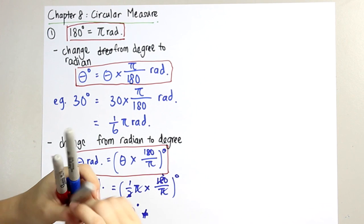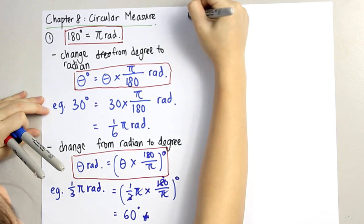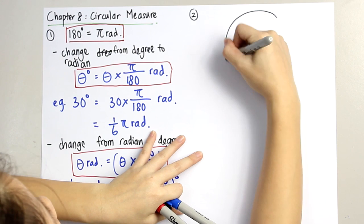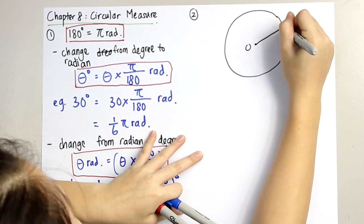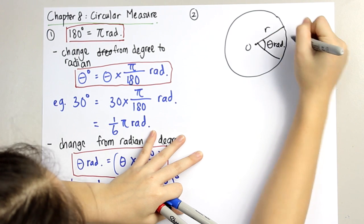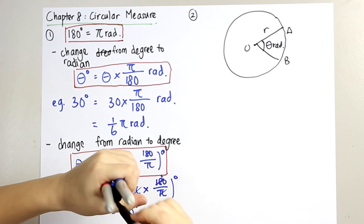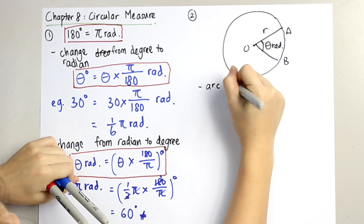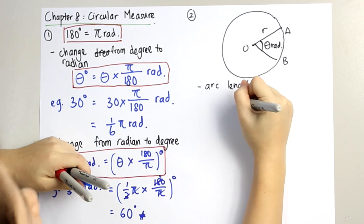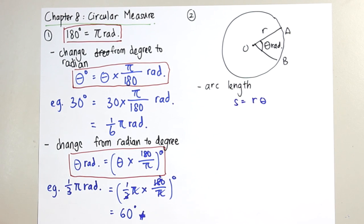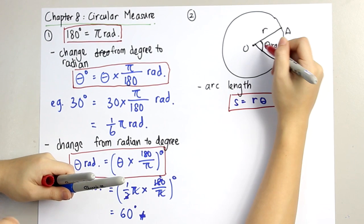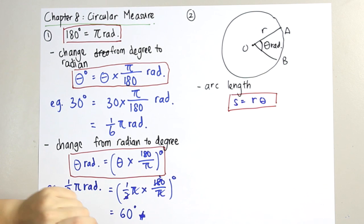The second type of question we'll encounter is finding the arc length and area of sector. Let's say we are given a circle and we are asked to find the arc length. We use the formula s equals r theta, where s is the arc length, r is the radius, and theta is the radian of the angle.